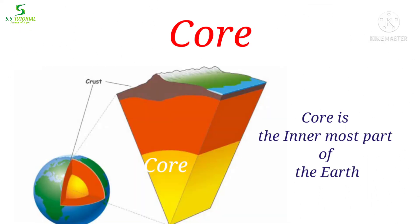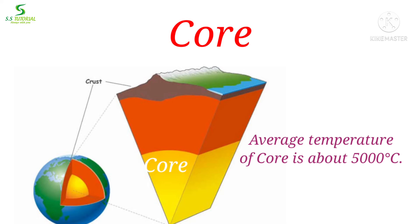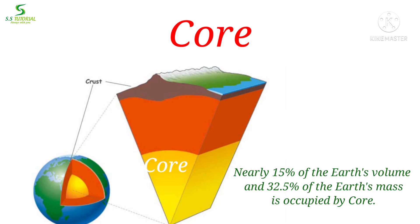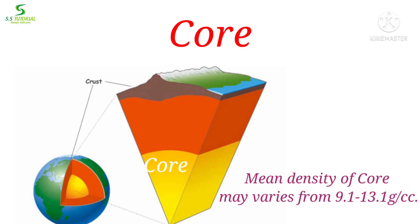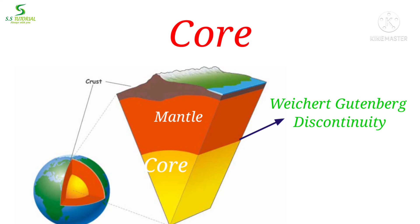Let's know about the core. The core is the innermost part of the earth, surrounding the earth's centre. It lies between 2,900 km and 6,370 km. Average temperature of the core is about 5,000 degrees centigrade. Even at such high temperature, the materials at the centre of the earth are in a solid state because of heavy pressure. Nearly 15% of the earth's volume and about 32.5% of the earth's mass is occupied by the core. Mean density of the core varies from 9.1 to 13.1 g per cubic centimetre. The core is mainly composed of nickel and iron, which is why it is also known as NIFE. The discontinuity between mantle and core is known as the Wiechert-Gutenberg discontinuity.